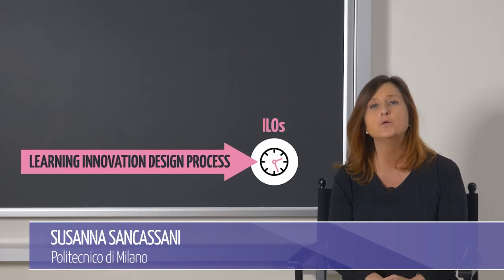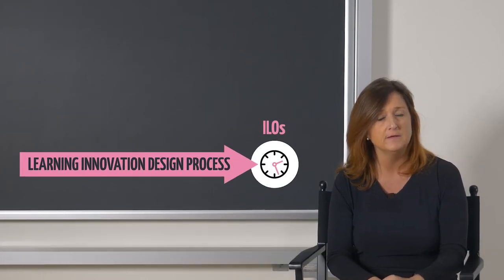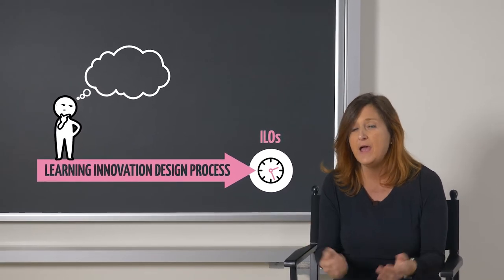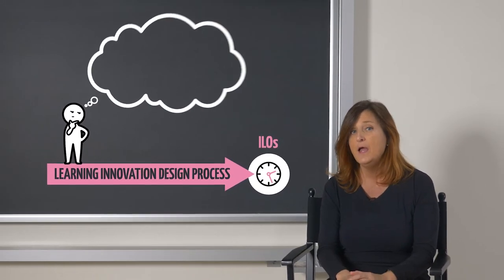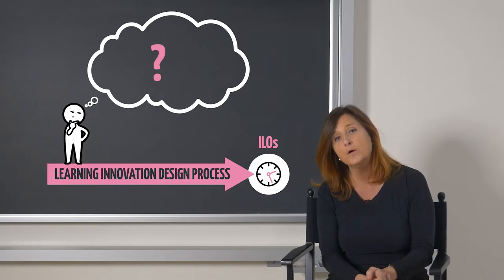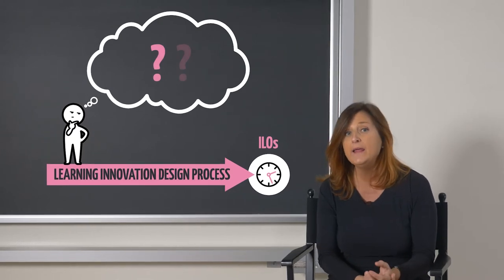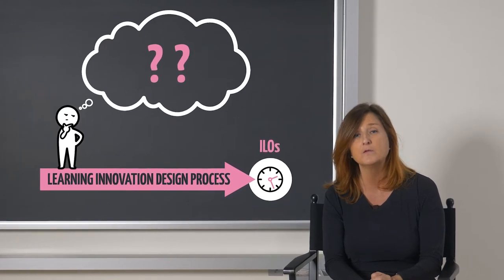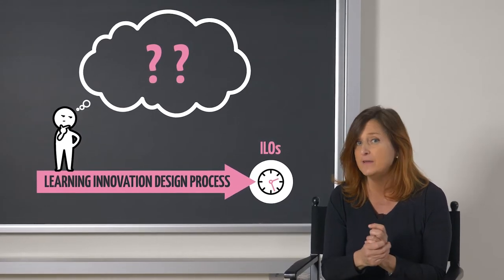Once the course has started and the activities designed to develop soft skills have been tested, it's normal to wonder if they are effective and fit the initial purposes. How to identify what worked and what didn't? When can we say that the whole process of integration of active learning methods is working effectively?